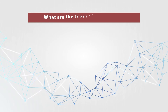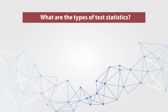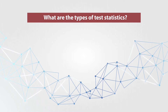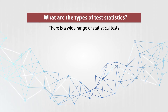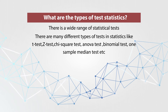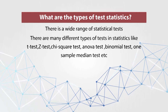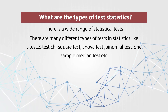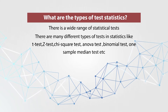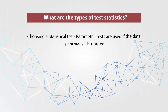There are various types of test statistics and a wide range of statistical tests. The many different types include t-test, z-test, chi-square test, ANOVA test, binomial test, and one sample median test. When choosing a statistical test, parametric tests are used if the data is normally distributed.